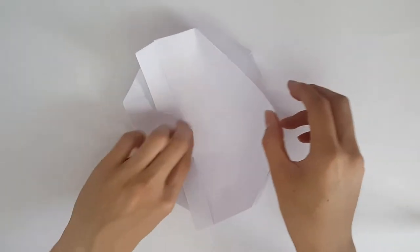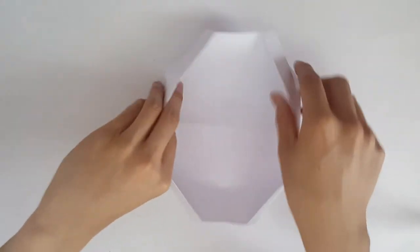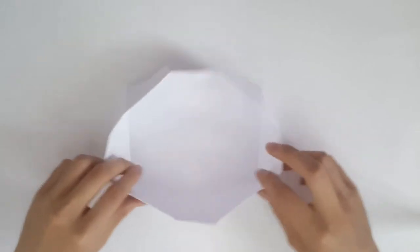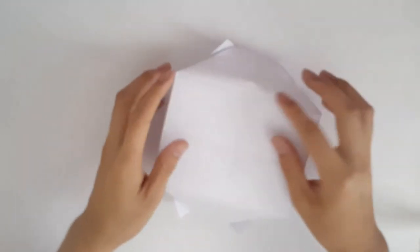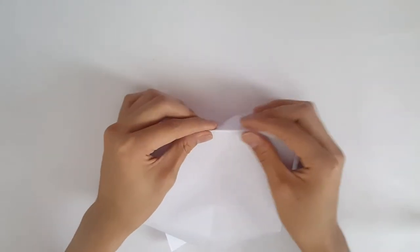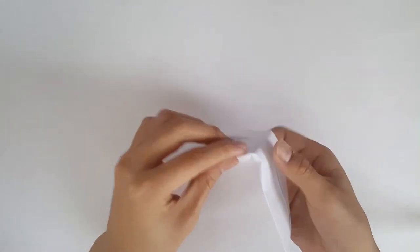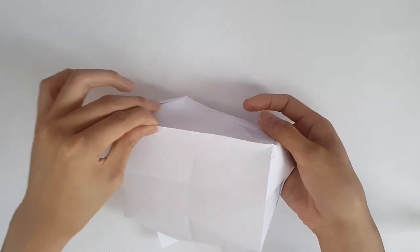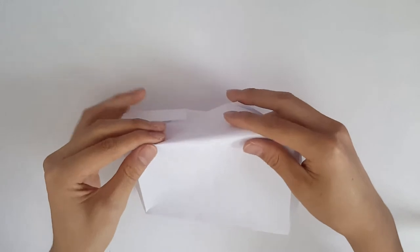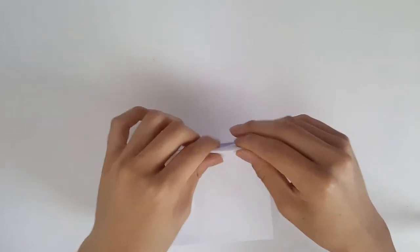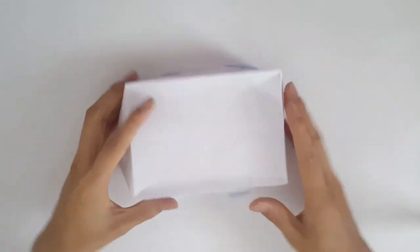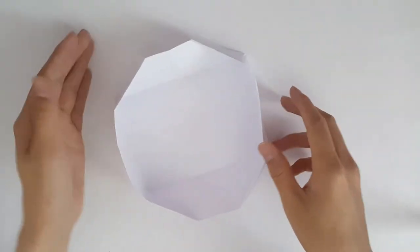Once we've done that, we're going to turn it vertically, and we're going to gently open up the paper. Once we've got its general shape, we'll just follow the crease lines and go over it, gently pinching across to form the rectangle shape. So first we'll start off with the base, and then it should form a nice rectangle shape.